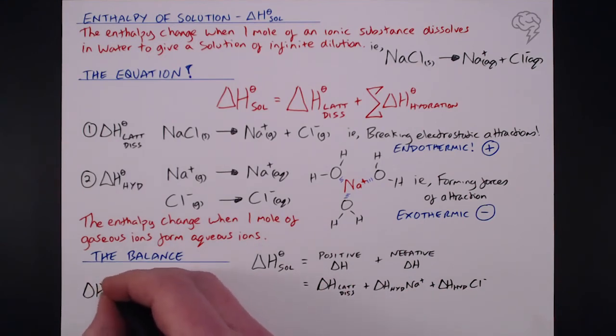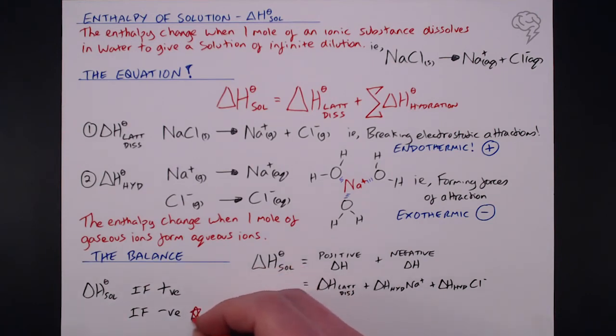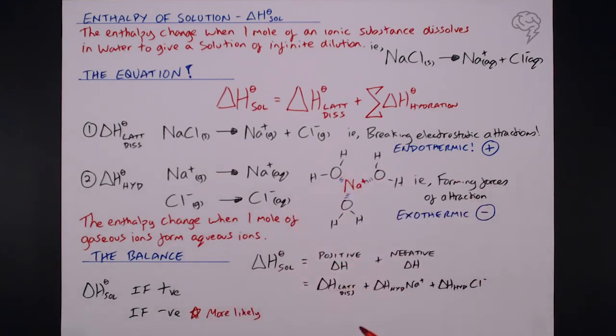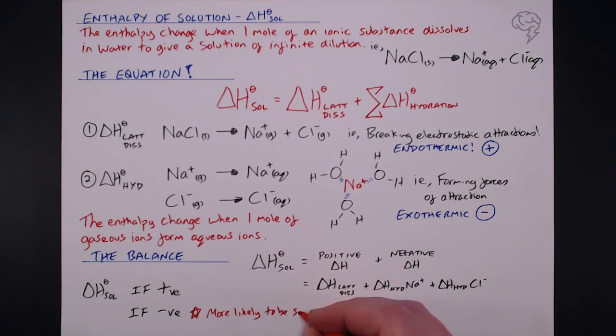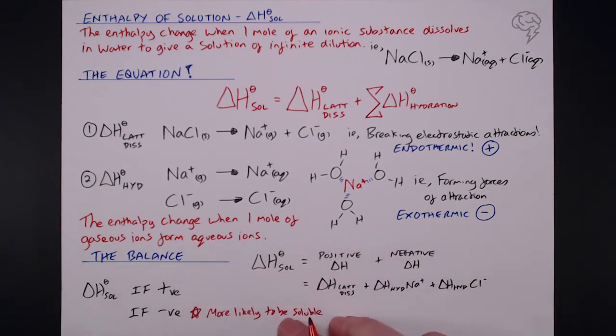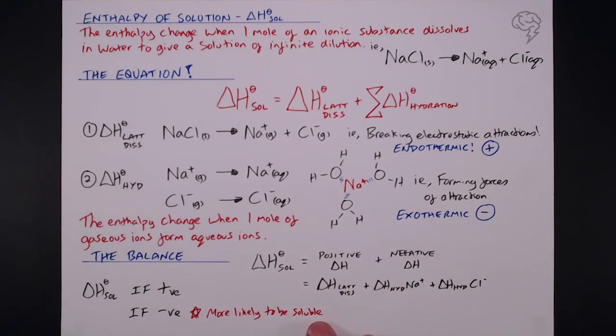But what does that mean? Well, delta H solution, if it's positive, it's less likely to be soluble. If it's negative, it's more likely to be soluble. So you may get questions on this. So a negative delta H solution is more likely to be soluble. Negative or the least positive. Because that releases energy when it dissolves, rather than needing energy to dissolve. So negative ones or least positive ones are more likely to be soluble.